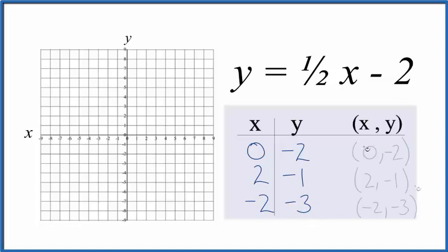So these are the points we'll graph for the equation y equals one half x minus two. So we start out with x is zero, and we go down y is negative two. We have x is two,